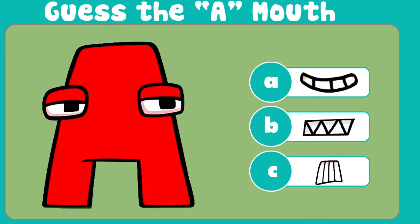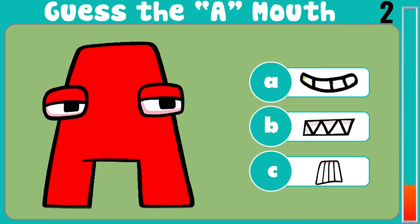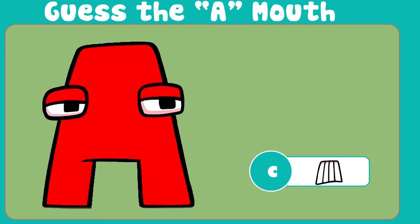Question 1. Look closely at the questions. Get the alphabet lower your mouth. You have three options: A, B, and C. The answer is C.